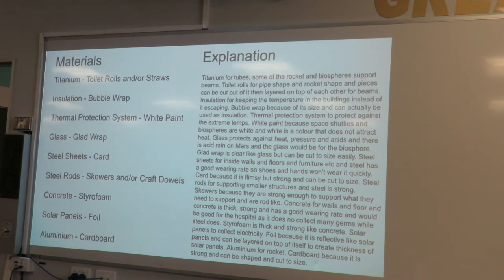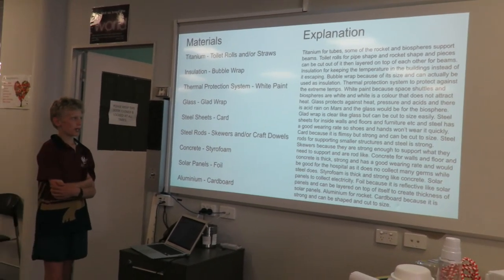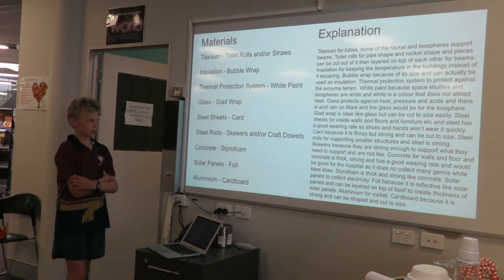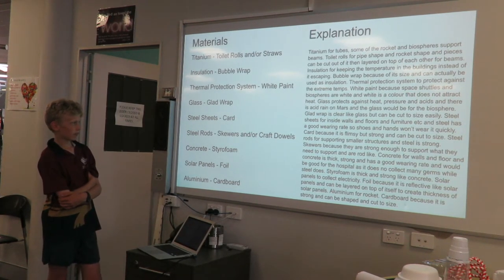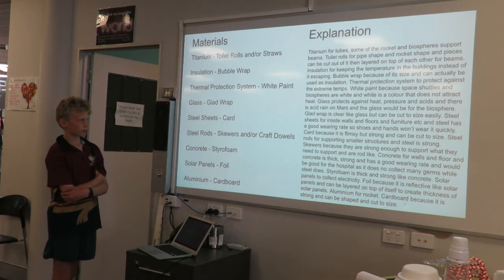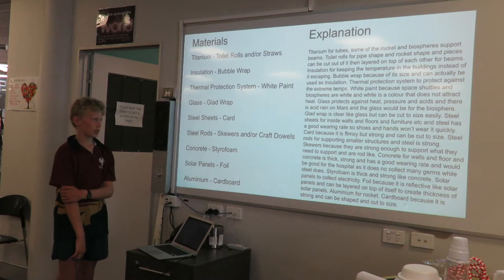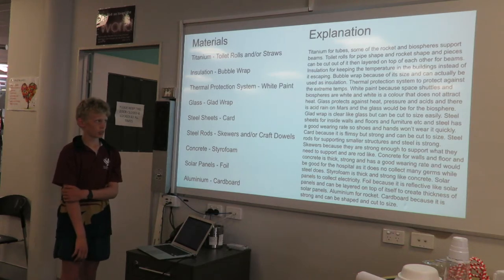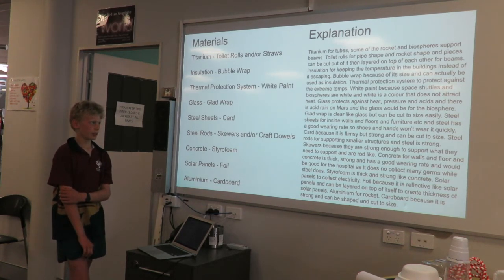Thermal protection system to protect against extreme temperatures. White paint because space shuttles and biospheres are white, and white is a colour that does not attract heat. Glass protects against heat, pressure, and acids — and there is acid rain on Mars — and the glass would be for the biospheres. Glad wrap is clear like glass but can be cut to size easily.